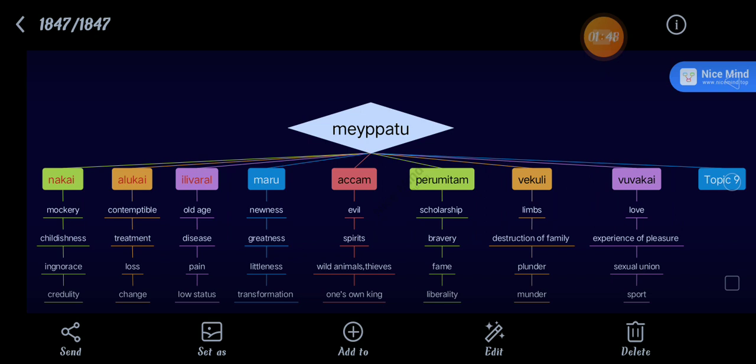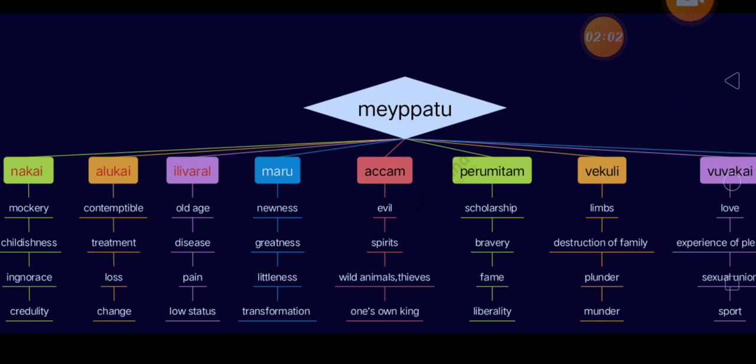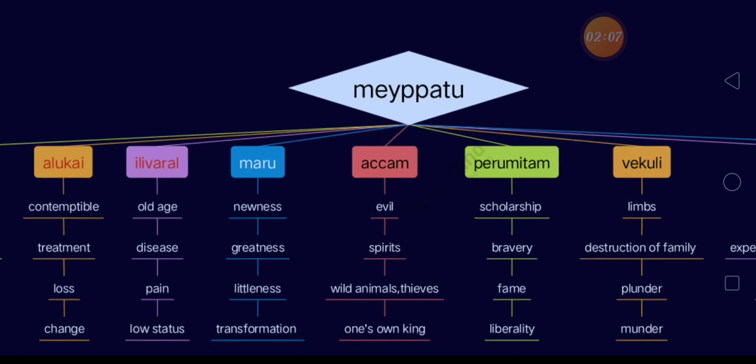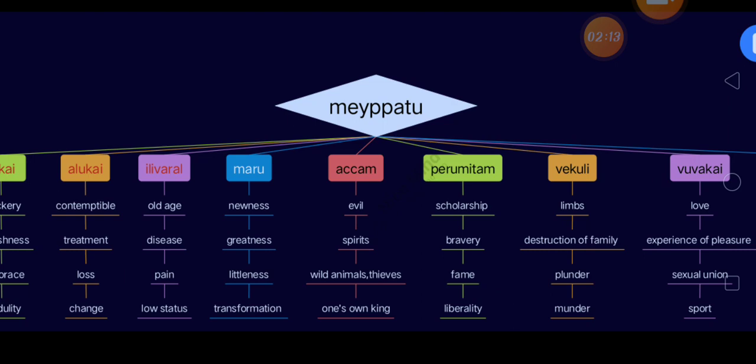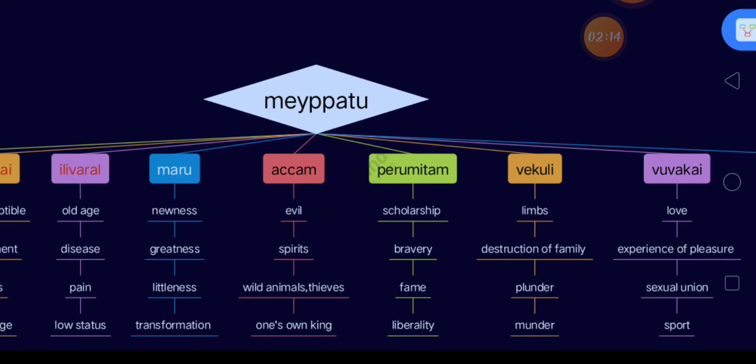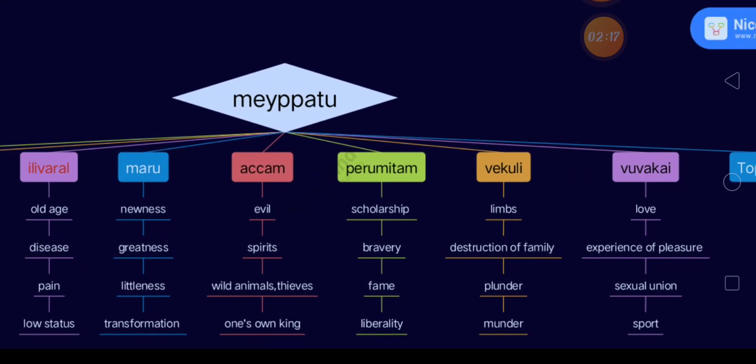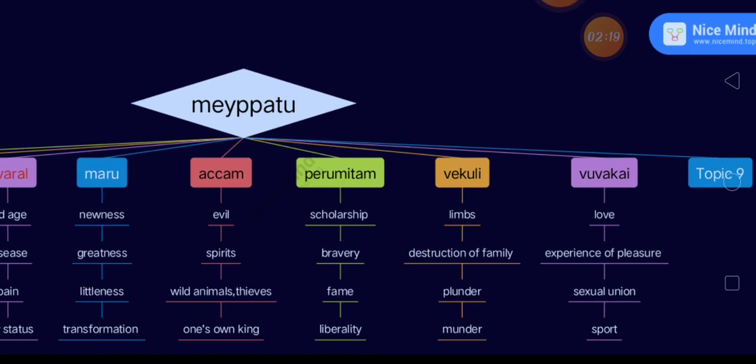Here we can see the eightfold Meipatu in order: Nakhai (laughter), Aluhai (weeping), Illiberal (odious), Marutkai or Maru (wonder), Acham (fear), Perumidham (majesty), Vekuli (angry), and Uwagai (joy).